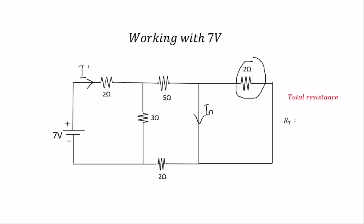For the total resistance, we know that the 5 ohms plus the 2 ohms will be in series since the current passes through them, and also they will be in parallel with the 2 ohm resistor.